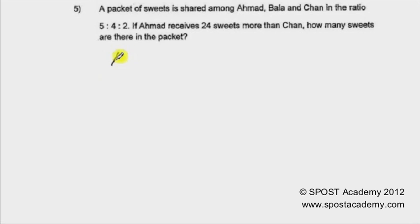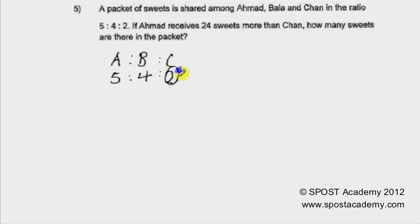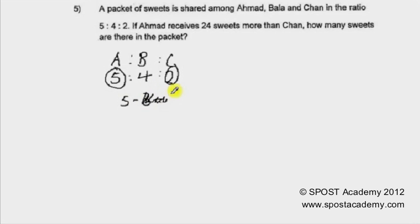The ratio of Ahmad to Bala to Chan is 5 is to 4 is to 2. We are now comparing Chan and Ahmad. How many units does Ahmad have more than Chan? We take 5 minus 2 is equal to 3 units.